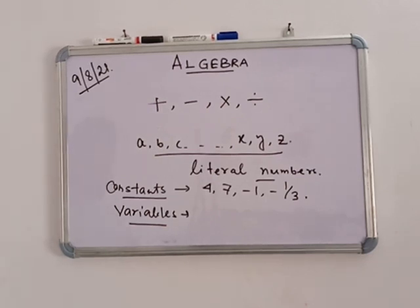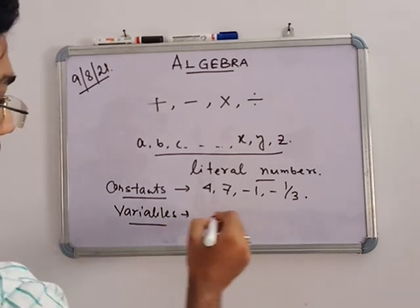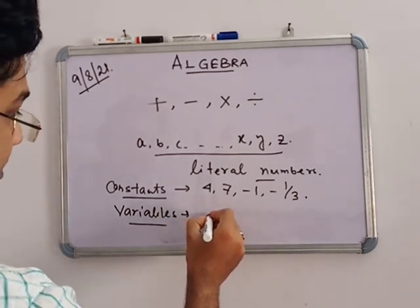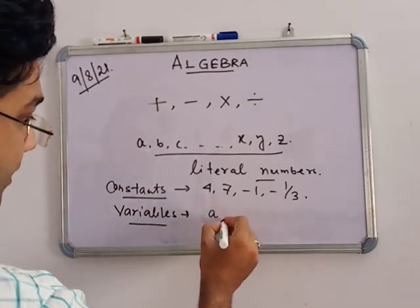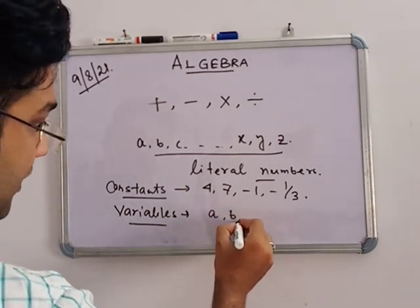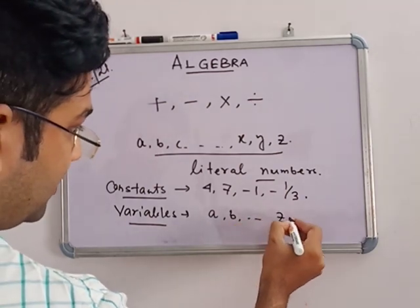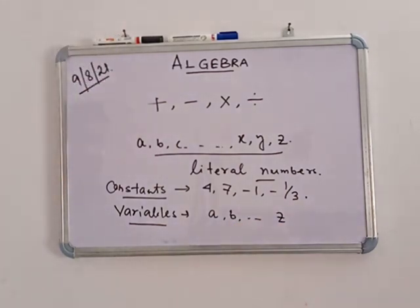What are variables? Variables are unknown numbers. Suppose A, B, dot dot dot up to Z — all are variables. A variable can take any value and is not fixed.